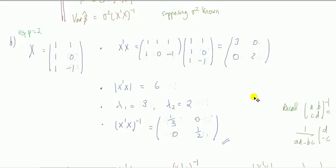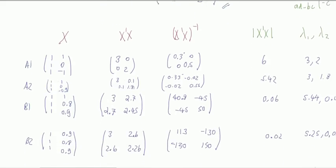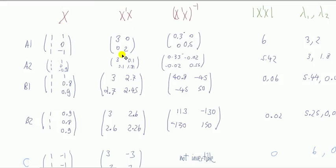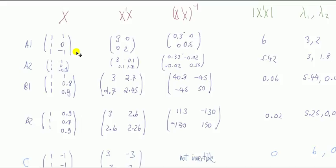I'm going to tabulate this for various x matrices. I have three cases: A (no multicollinearity — orthogonal design), B (high but not perfect multicollinearity), and C (perfect multicollinearity). For the A cases, there's absolutely no multicollinearity. There's no linear combination — you can't multiply one column by a scalar to get the other. The inner product of the two columns equals zero, so the vectors are perpendicular. That means there's zero multicollinearity, no relationship between the columns.